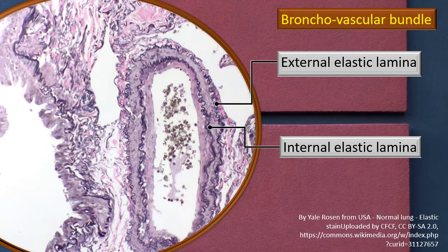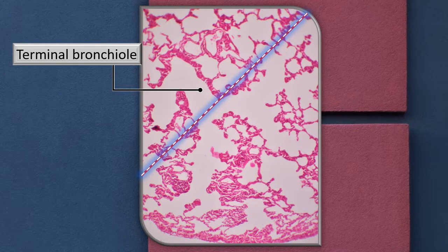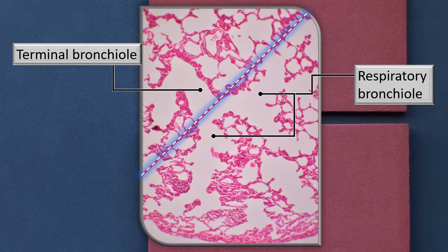This photograph begins the discussion on the respiratory portion of the lung. I have put a dotted red-white line with a blue haze around it to roughly demarcate the terminal bronchiole from the respiratory bronchiole. The terminal bronchiole epithelium is still thick, so no respiration is possible here. In contrast, the epithelium becomes very thin, single, and squamous — that is the respiratory bronchiole. You can see one terminal bronchiole dividing into two respiratory bronchioles in this photograph.